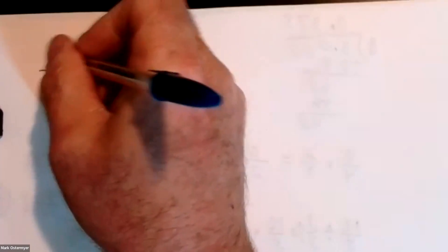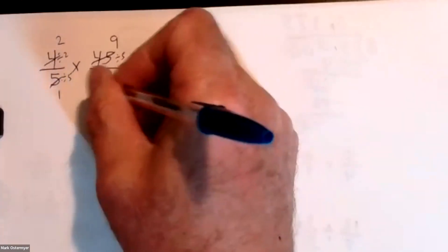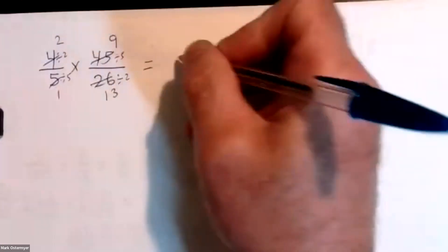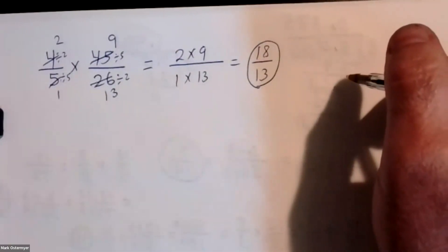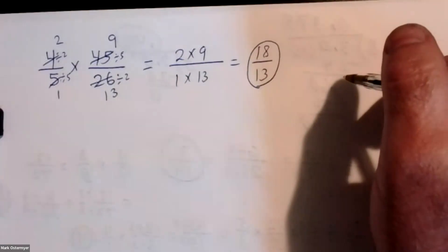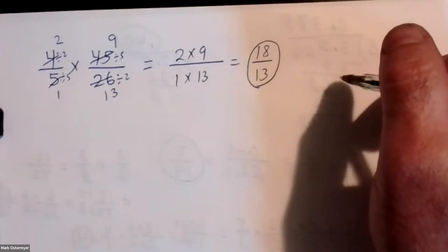Let's do cross-canceling. Five divides into itself one time, five divides into forty-five nine times. Two divides into four twice, two divides into twenty-six thirteen times. Now what's two times nine, sitting over one times thirteen? We've got eighteen over thirteen. That works — correct.